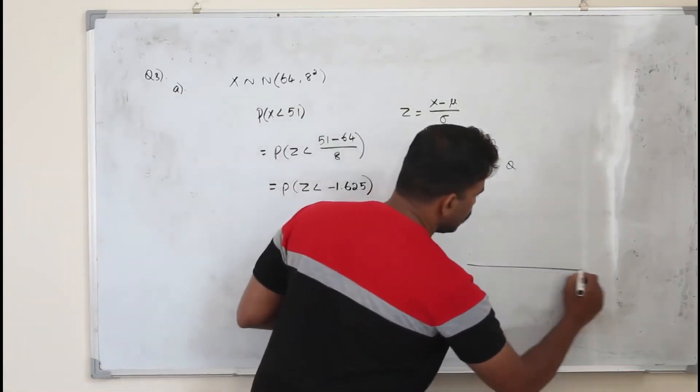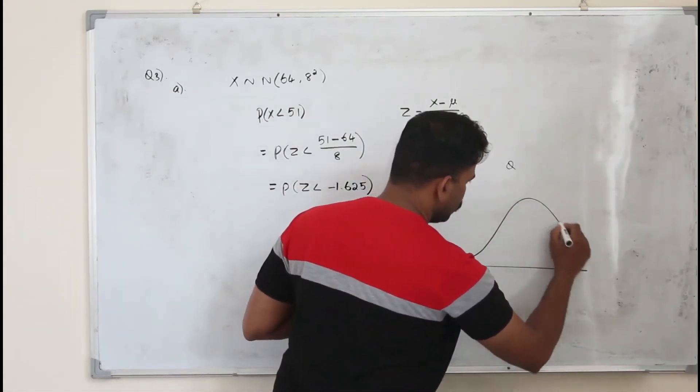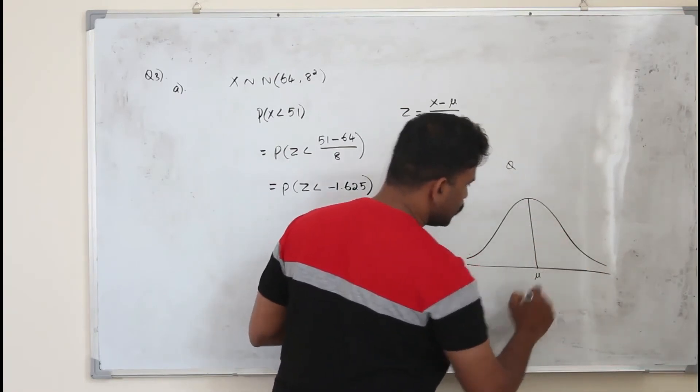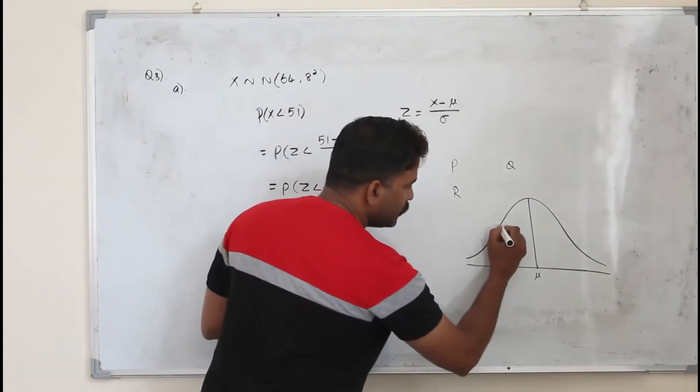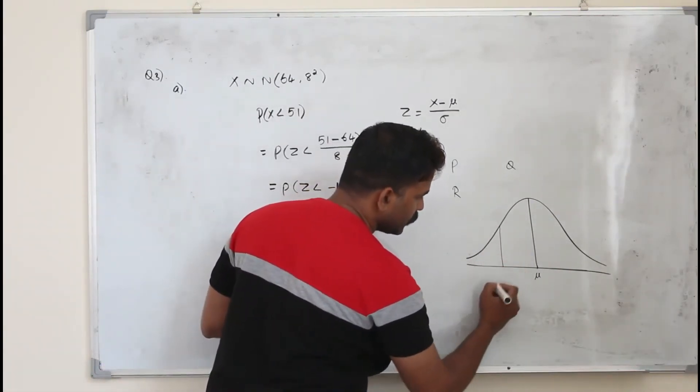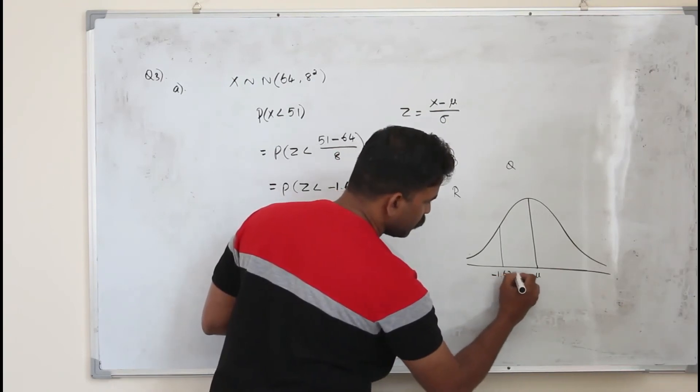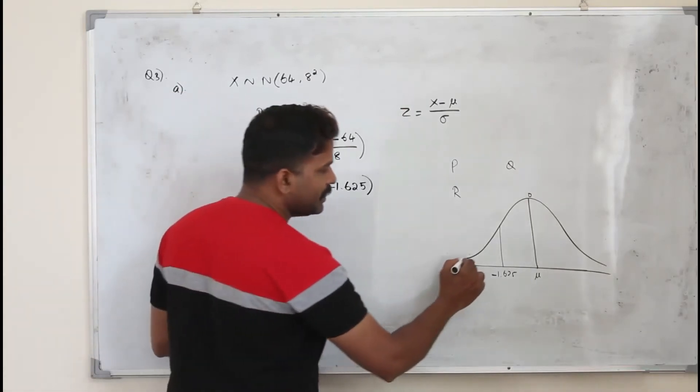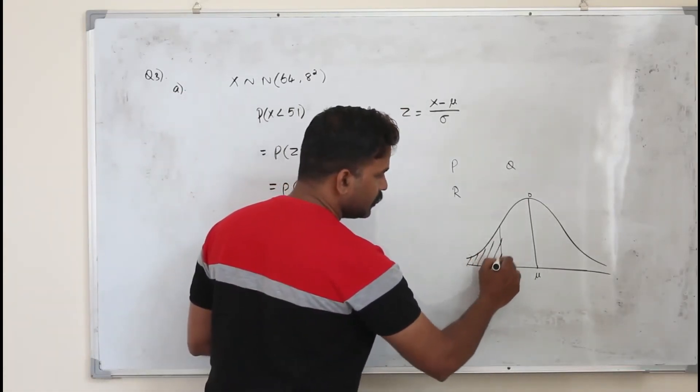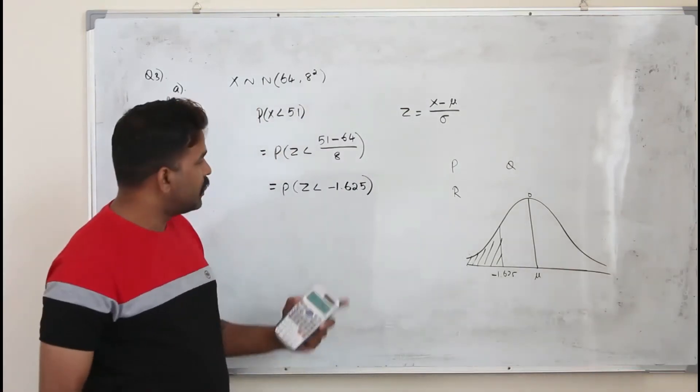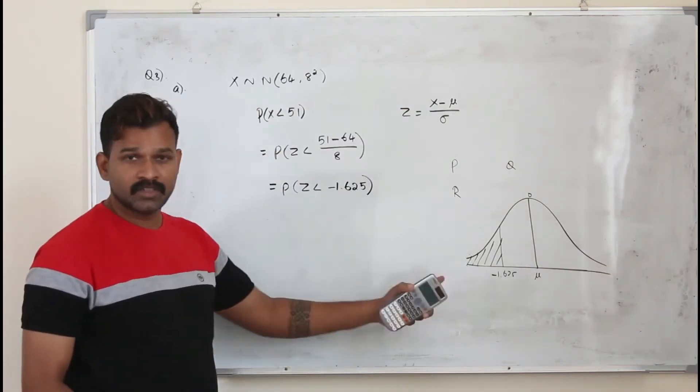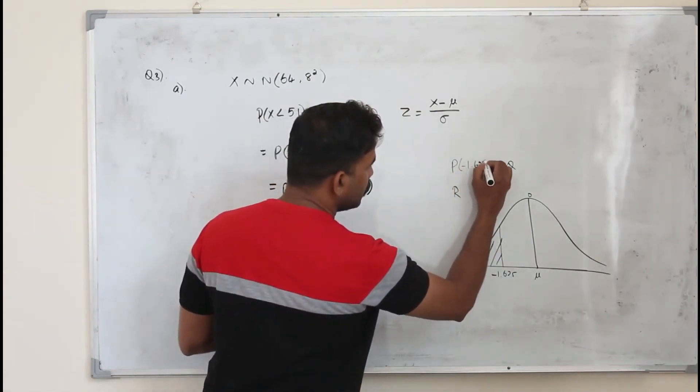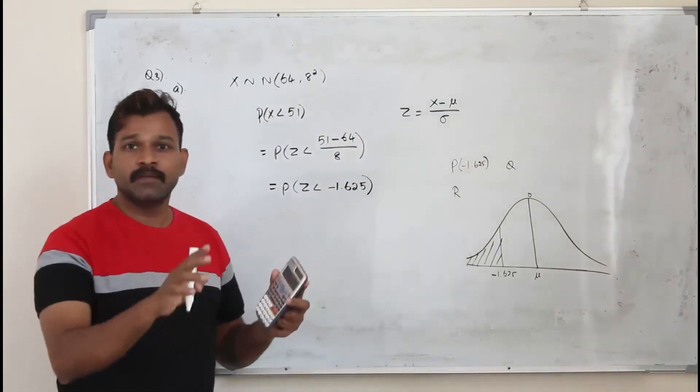If you look at the normal distribution bell curve, so this is the mean, mu. Let's say you have some value here, for example in this case minus 1.625. This is 0. And if you want to find this area, the area that lies on the left hand side of the value, which is P of Z less than this, you put this in here for P. The calculator will straight away give you the values.